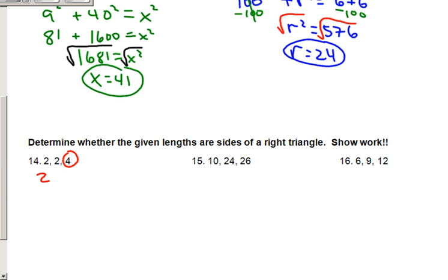Here's my longest side. So it's 2 squared plus 2 squared equals 4 squared. If this works out to be true, then yes, it's a right triangle. 4 plus 4 equals 16. Does 8 equal 16? No. So not a right triangle.